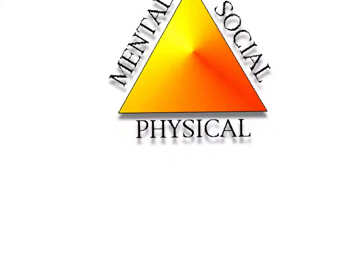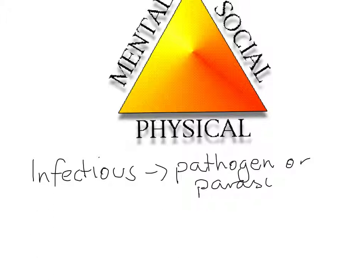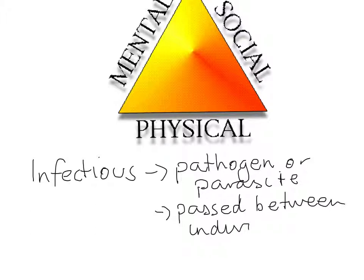The first type of disease is infectious disease. These are caused by pathogens or parasites. The other key aspect about them is they can be passed between individuals. A more complicated term sometimes used is communicable — they can be communicated between individuals.